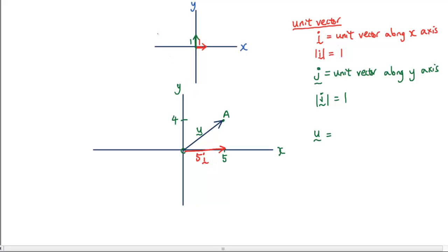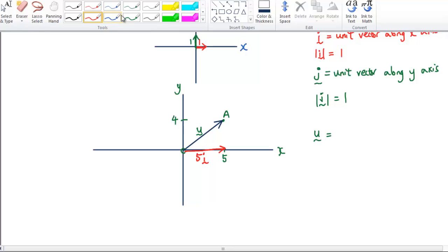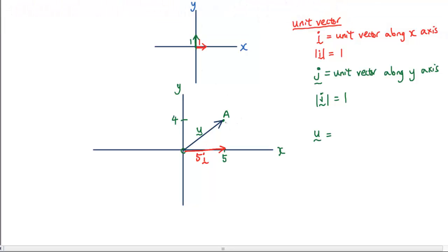And then if we want to express the vertical component of vector u, which is along the y-axis, it will be similarly, using the same concept, 4j. So therefore vector u can be written as 5i plus 4j. Any vector can therefore be expressed using this notation.